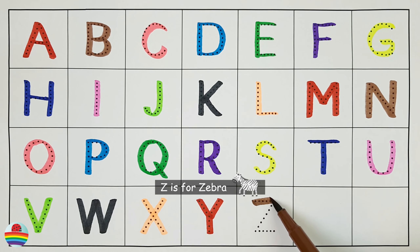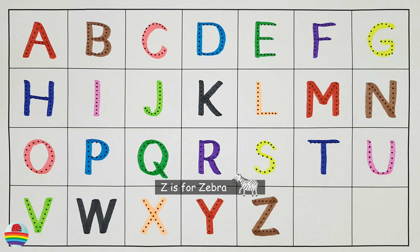W is for worm. X is for x-ray fish. Y is for yak. Z is for zebra.